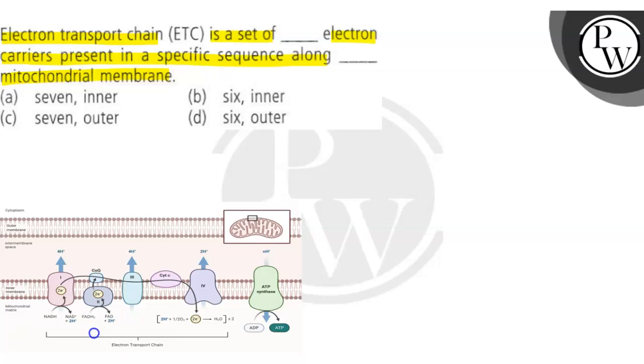Electrons are transferred from NADH and FADH2 to O2 through a series of electron carriers present on the inner mitochondrial membrane. This is the outer mitochondrial membrane and this one is the inner mitochondrial membrane. So where is it happening?